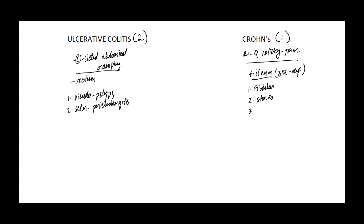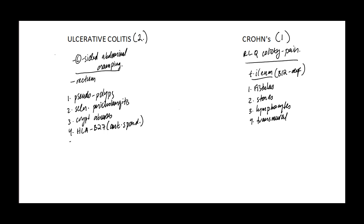Which one has lymphocytes when you look microscopically? Which one is transmural? Which one gives you crypt abscesses microscopically? Which one is associated with HLA-B27 — two words, right? Or ankylosing spondylitis, which is also two words. Which one is associated with pyoderma gangrenosum? Which one involves granulomas? Only one of these has an obstruction — this is the one with the obstruction.